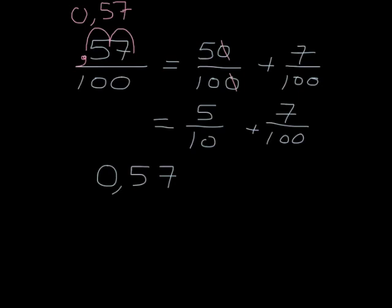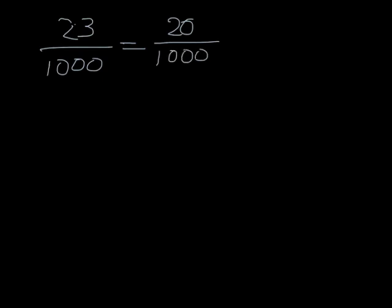Let's do another example using both the trick, but first we will do the more explaining way. So let's have a look at something like 23 over 1,000. This is equal to 20 over 1,000 plus 3 over 1,000. Again, we can now simplify that fraction, 20 over 1,000. In this case, we can divide top and bottom of the fraction by 10, and that will give us 2 over 100.